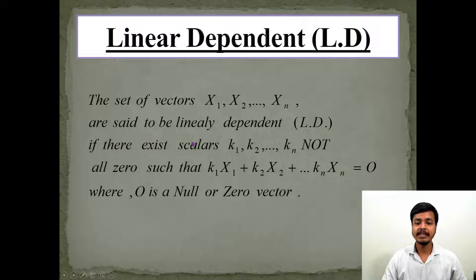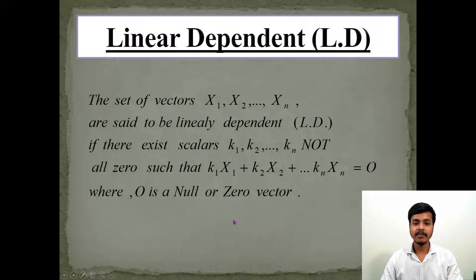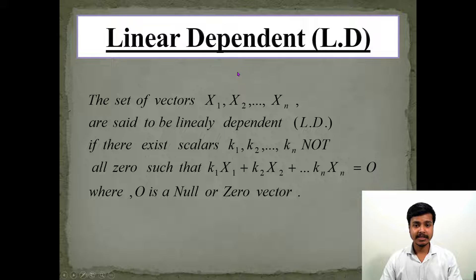Next is linearly dependent vectors. A set of vectors x1, x2, ..., xn are said to be linearly dependent if there exist scalars k1, k2, ..., kn — not all zero — such that the linear combination equals zero. 'Not all zero' means there should be at least one scalar which is non-zero, and this zero denotes the null vector. Now, can you define linearly independent vectors? Pause the video for a few seconds and try.